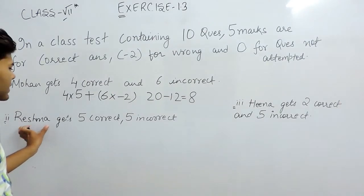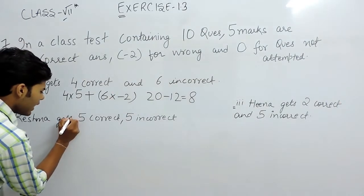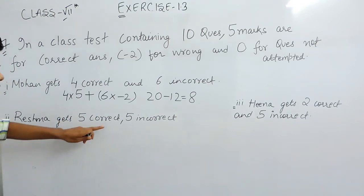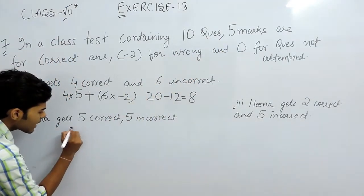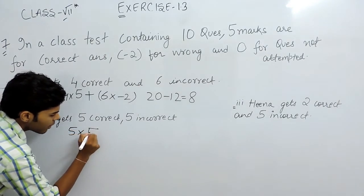Now the next part says Reshma gets 5 correct and 5 incorrect. For 1 correct answer, we give 5 marks. So for 5 correct answers, we will give 5 multiplied by 5 marks.